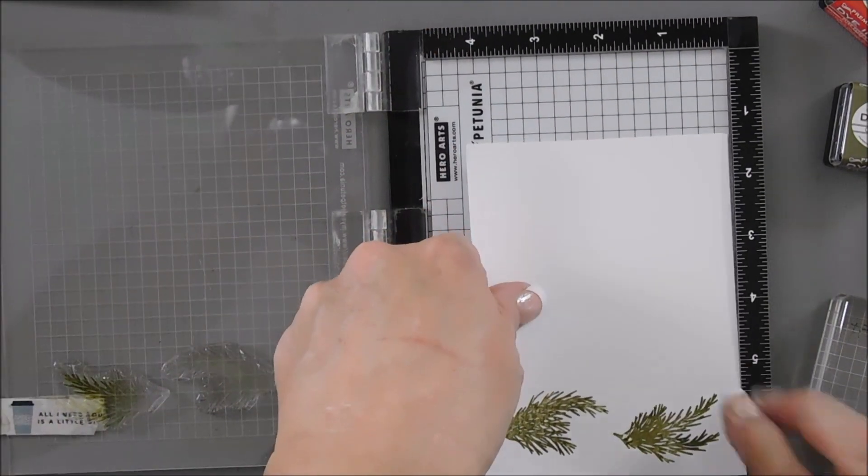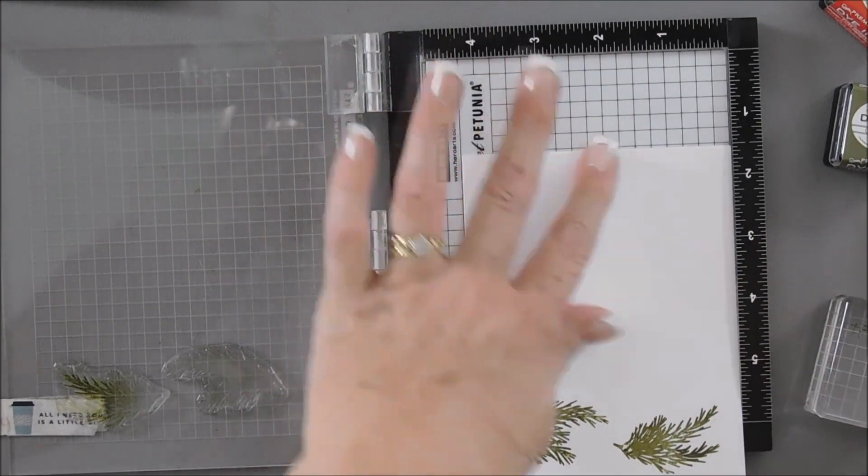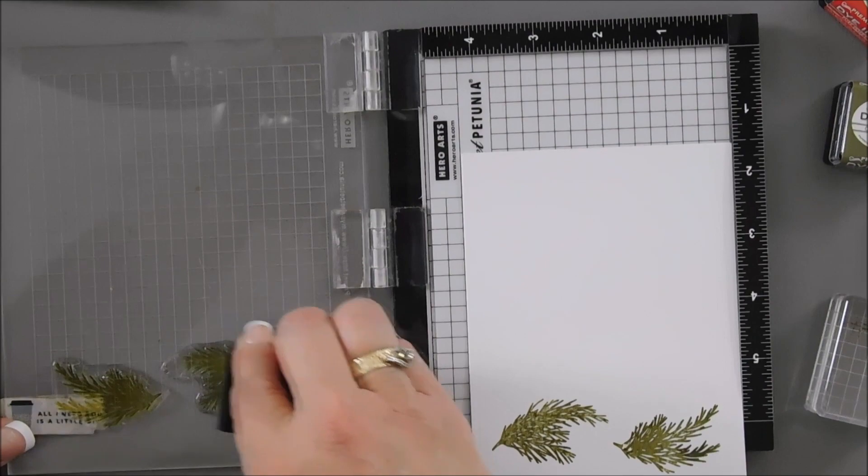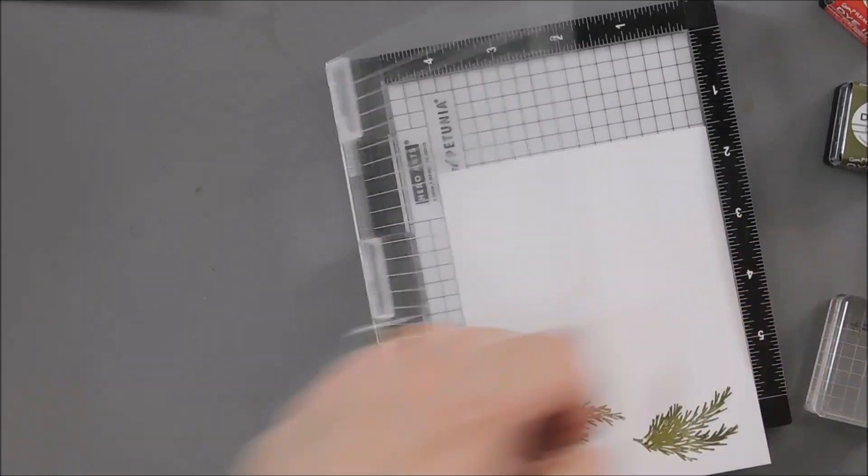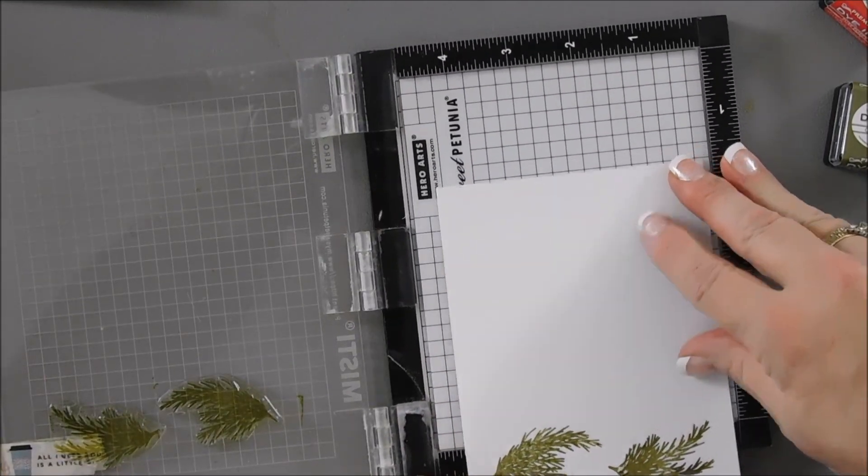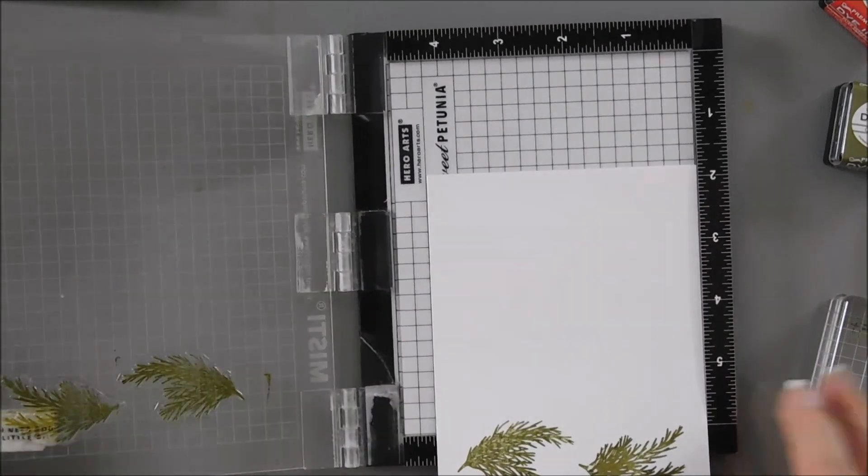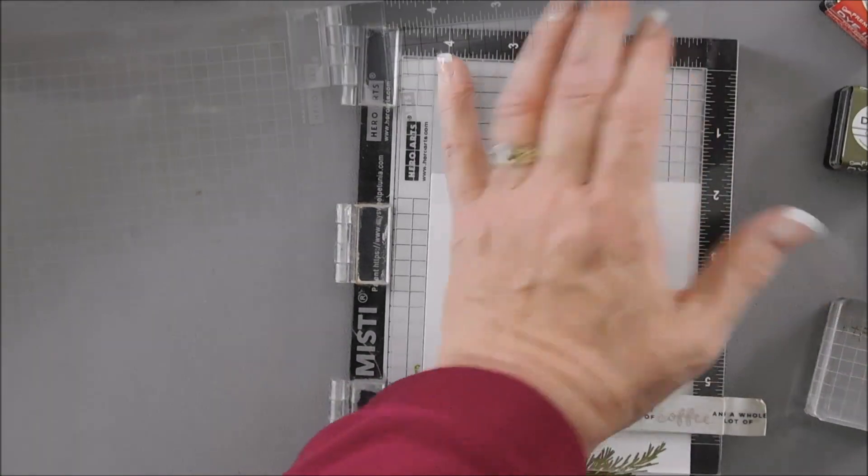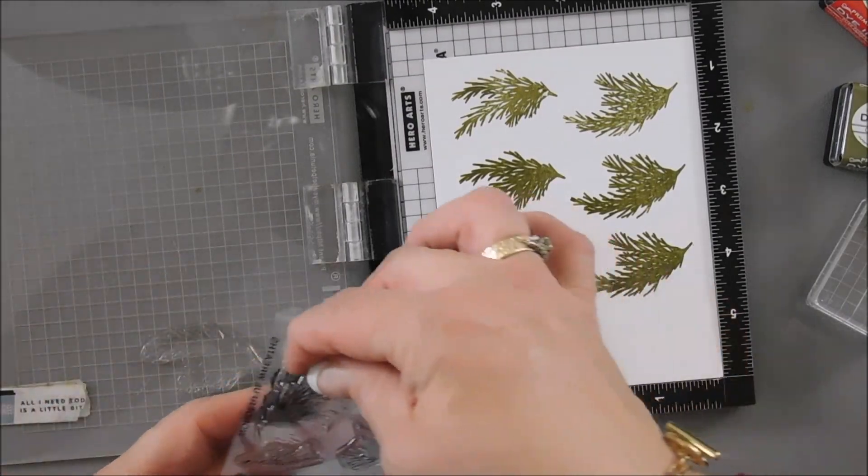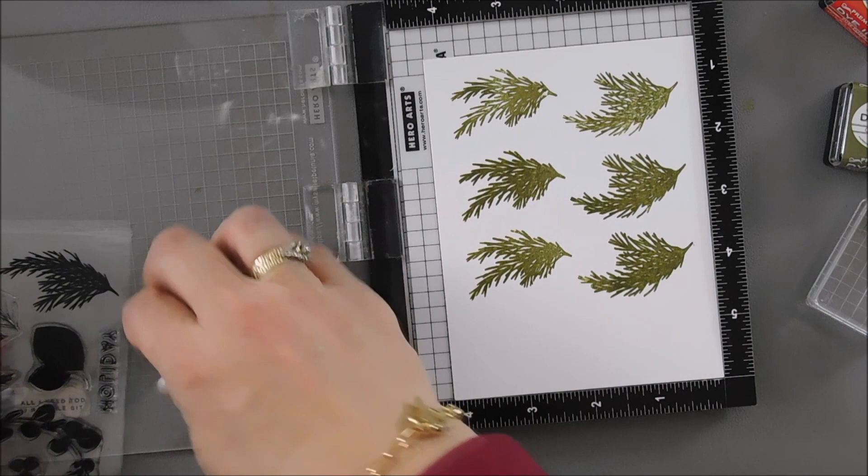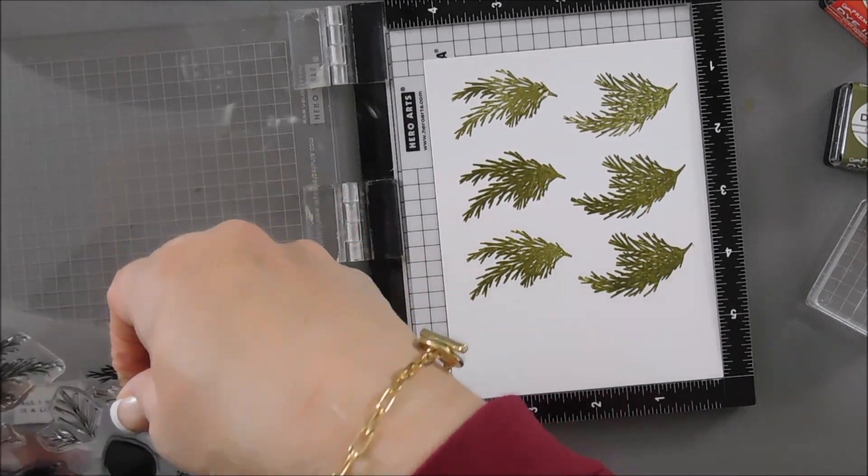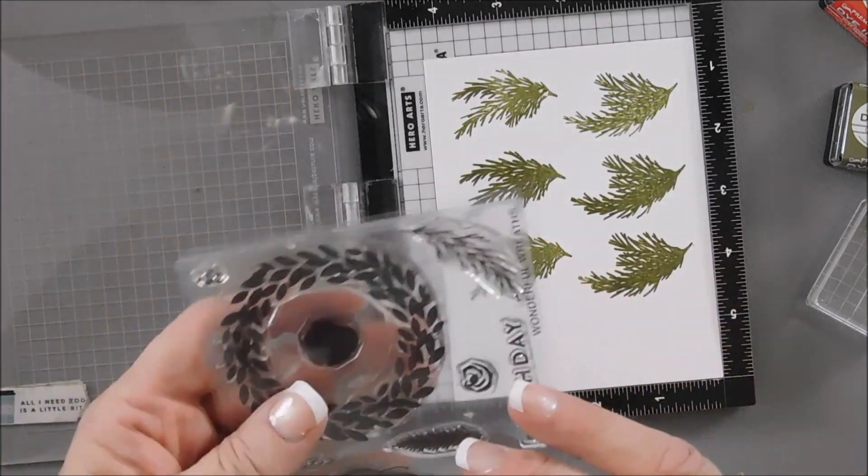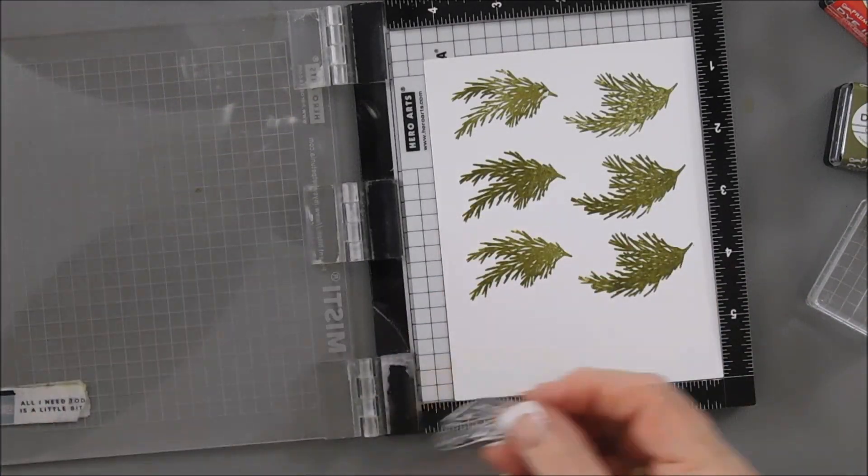Instead of, I'm going to stamp these a few times. So I'm just going to scoot my paper down. Better scoot it down a little bit more. And we're going to stamp again. I'm going to put my pine needles back. And there's one more long pine needle in here. And it's this one on this side. This one. I'm going to stamp this as well.